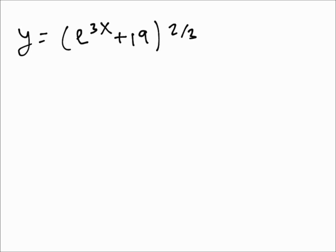For our second problem we have something a little bit more complicated: e^(3x) + 19 all to the 2/3, which means we have to use the power rule and the formula for exponential functions.